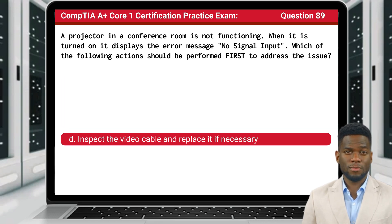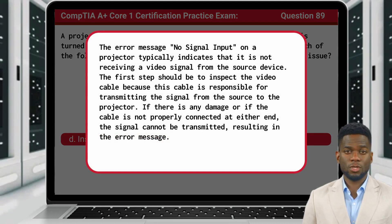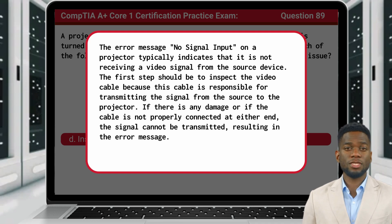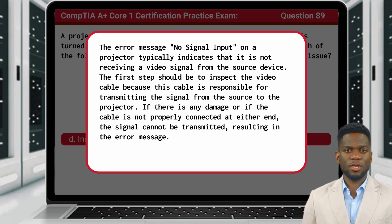The answer is D: Inspect the video cable and replace it if necessary. The error message 'No Signal Input' on a projector typically indicates that it is not receiving a video signal from the source device. The first step should be to inspect the video cable, because this cable is responsible for transmitting the signal from the source to the projector. If there is any damage or if the cable is not properly connected at either end, the signal cannot be transmitted, resulting in the error message.